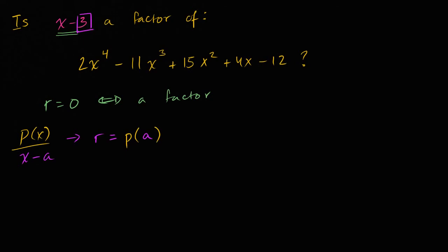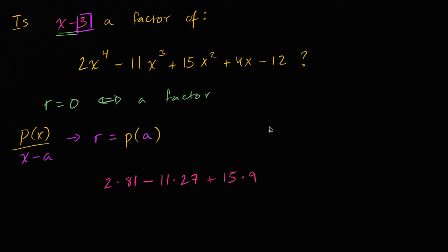So let's try it out. I'll do it all in magenta. It might be a little computationally intensive. So it's going to be two times three to the fourth power. Three to the fourth — three to the third is 27, so three to the fourth is 81. Minus 11 times 27. This is going to get a little computationally intensive, but let's see if we can power through it. I probably should have picked a simpler example, but let's just keep going. Plus 15 times nine, plus four times three is 12, minus 12.